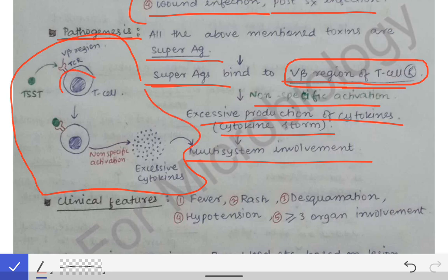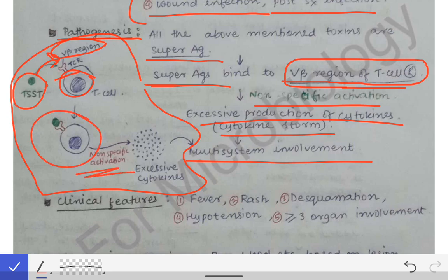Here we have a pictorial depiction of the entire pathogenesis. This is the T-cell and the T-cell receptor, with the variable beta region shown on the T-cell. The TSST binds to the variable beta region of the T-cell receptor, causing non-specific activation, release of excessive cytokines, multi-system involvement, multi-organ failure, and skin desquamation.